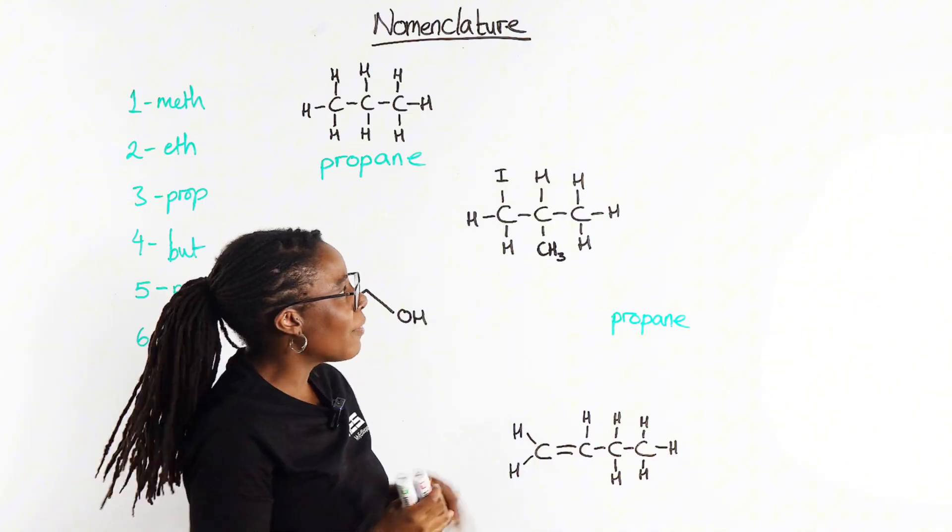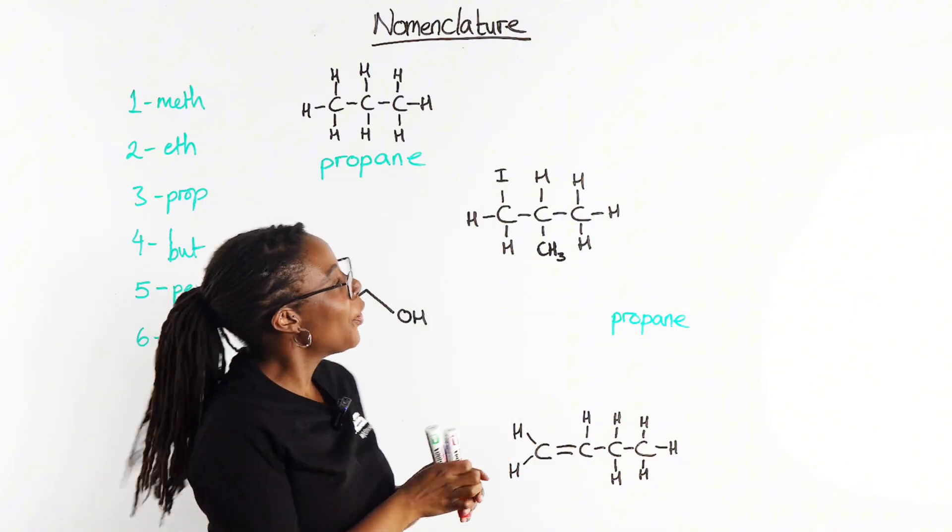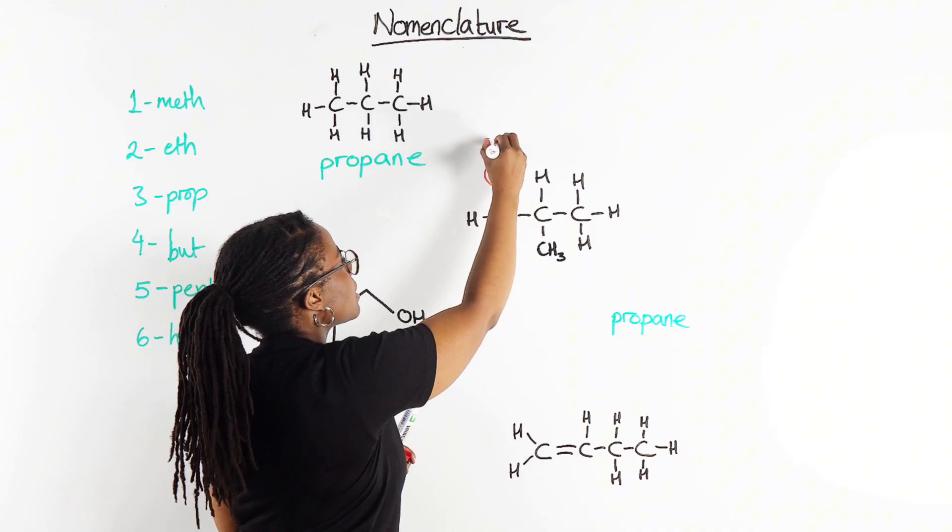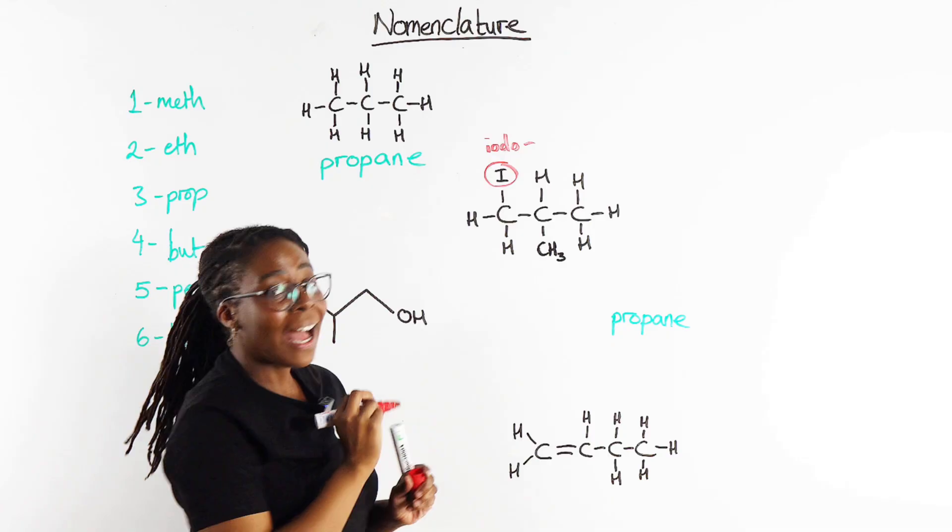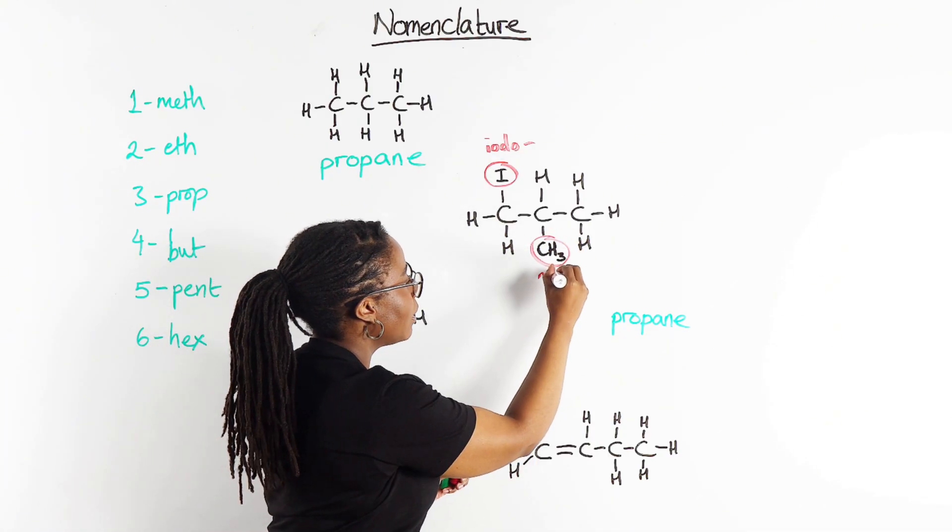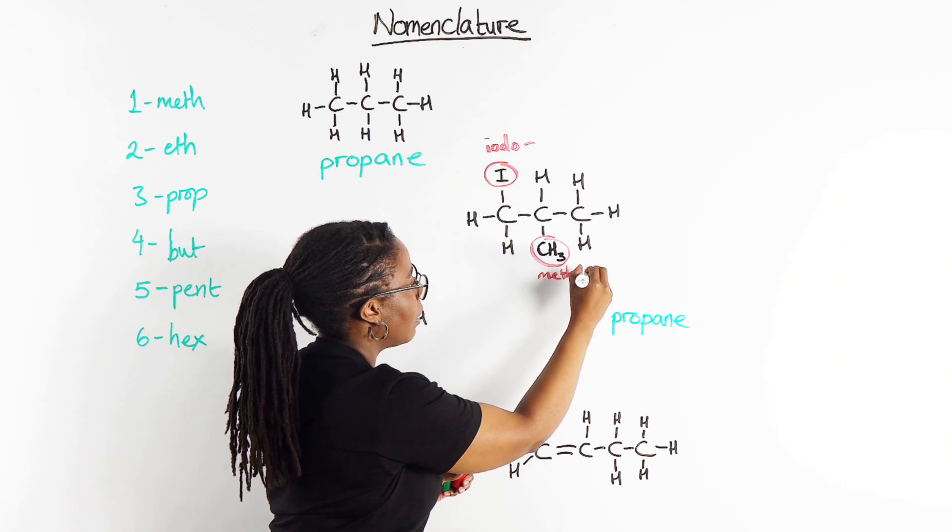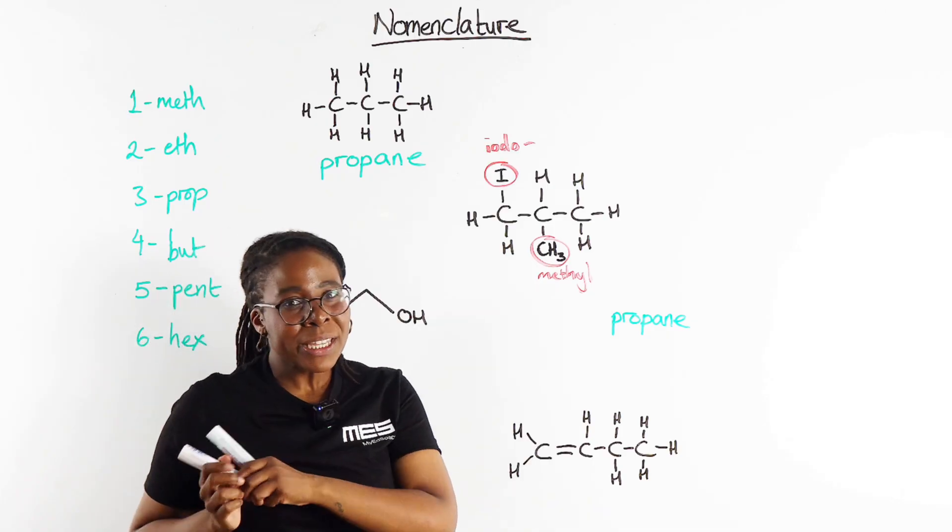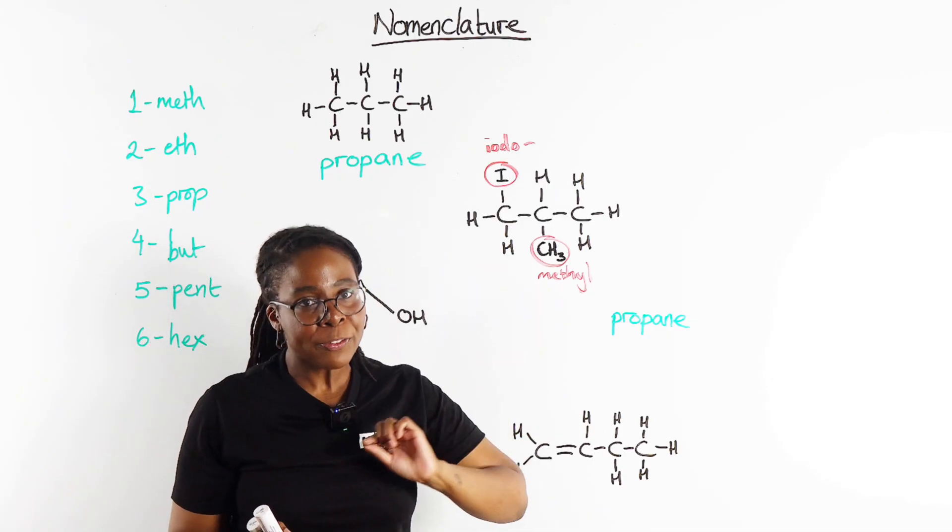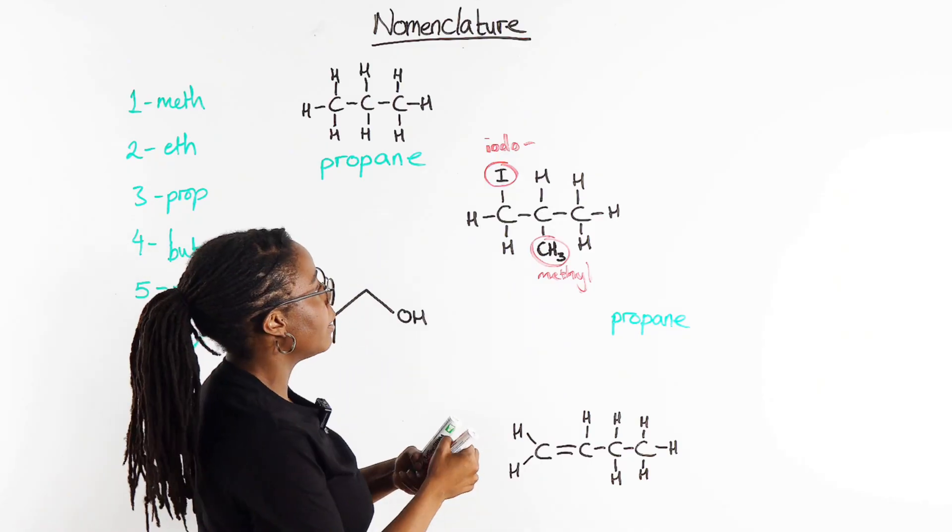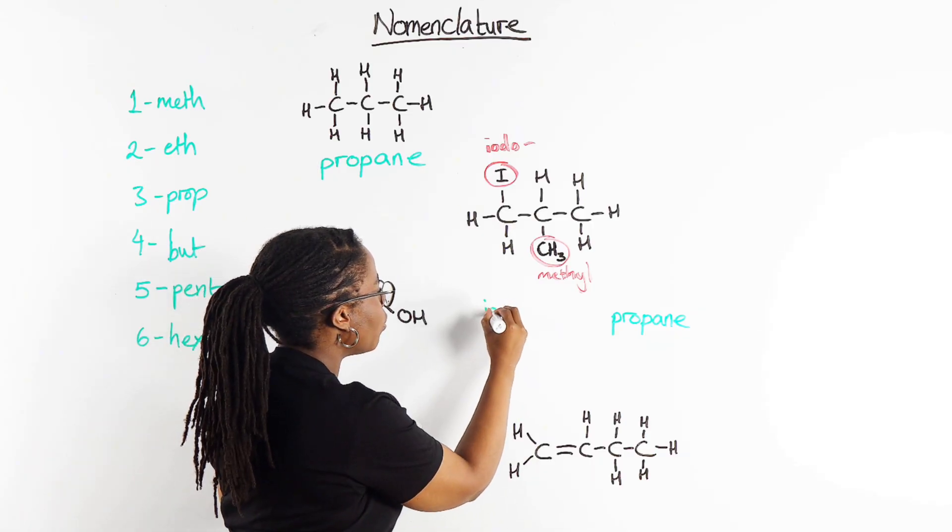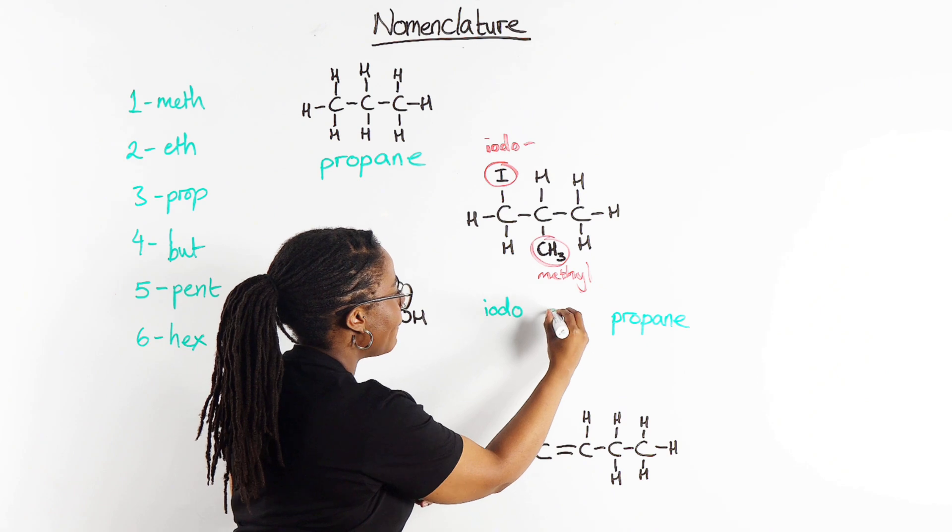Carbon chain, but we also have a couple of bits hanging off. We have got this iodine here which would give us a prefix iodo, and we have a methyl group here, one carbon chain so meth and then -yl. Putting these together to give us our final name, we have to remember that prefixes need to go in alphabetical order, so we can't say methyl iodo, we have to say iodo methyl.